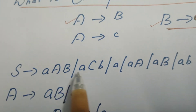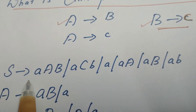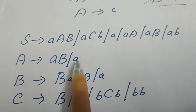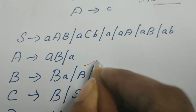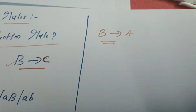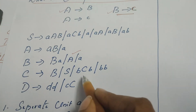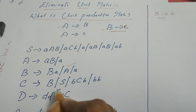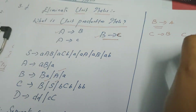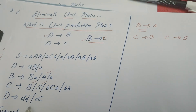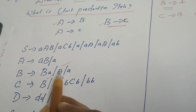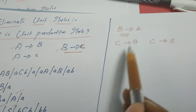Analyzing the rule for S: on the right-hand side there is no single variable, so S is not deriving any single variable. For A: A derives AB | A — no unit rule there. For B: B derives BA | A, which means we have the production rule B derives A, which is a unit production rule. For C: we have two unit rules — C derives B and C derives S. In the last rule for D, there is no unit production rule. So we have three unit rules: B derives A, C derives B, and C derives S.